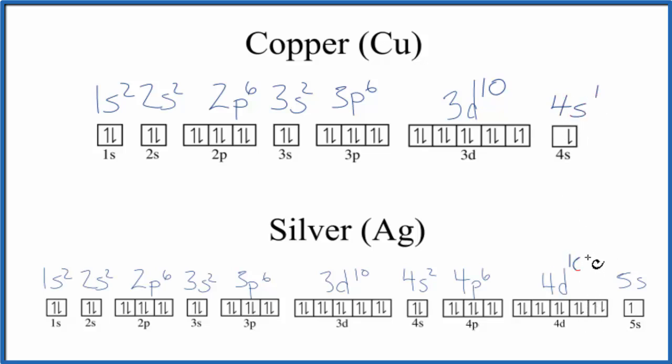So this is more stable. We have the d orbitals all full now. Yes, the s orbital is not full, but it's okay. Down here again, 4d—that's full as well. So these are the correct electron configurations for copper and silver, two more exceptions. And these guys follow a pattern as well.